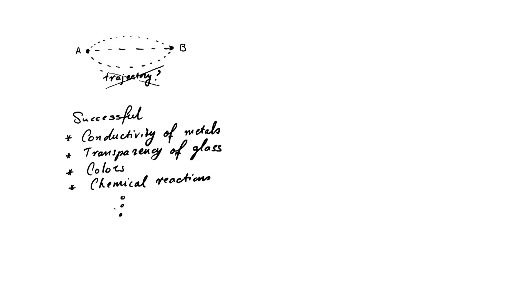Interestingly, the simplest version of this experiment was actually performed in the early 19th century, about 100 years before the birth of quantum mechanics. This may be an experiment that you actually learned about in high school physics. It's called Young's Double Slit Experiment, and was used by Thomas Young to establish the wave nature of light.